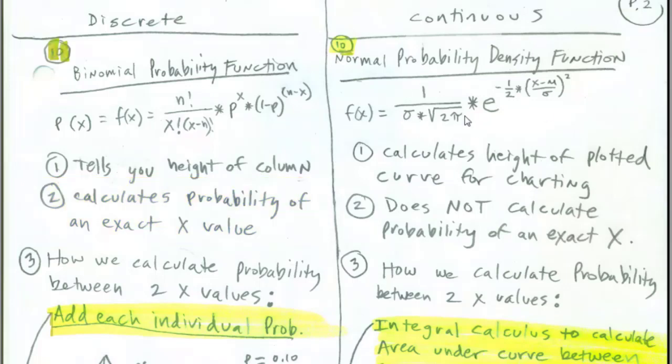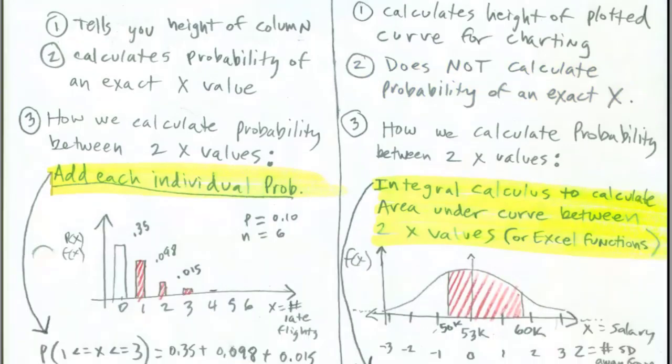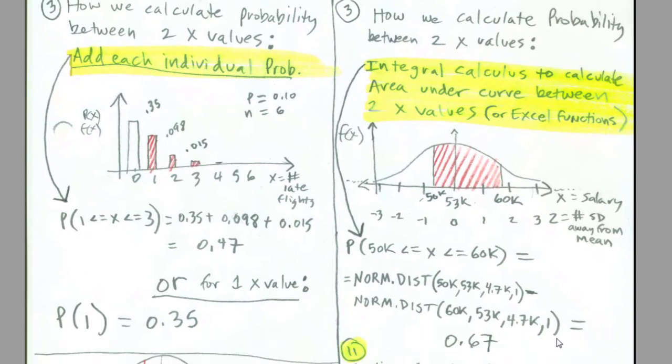This will not do that. It will, however, calculate the height of the plotted curve when we chart it. But it will not calculate the probability of an exact x. Both binomial and the normal distributions can calculate between two x values. Again, for the binomial, we just simply added them and got between two x's. Over here, we're going to have to do integral calculus.